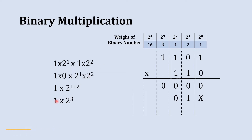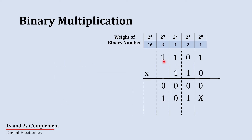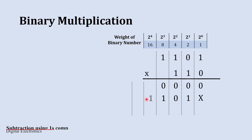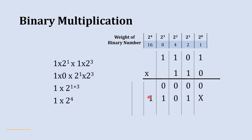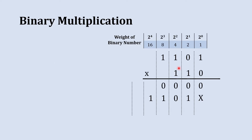That 1 will be placed at the 8's place. Now we are going to multiply this 1 with the final 1, and when we multiply 1 with 1 the answer is 1 and that should be placed at the 16's place. Now it's time to multiply this 1 of the multiplier with this 1 of the multiplicand.